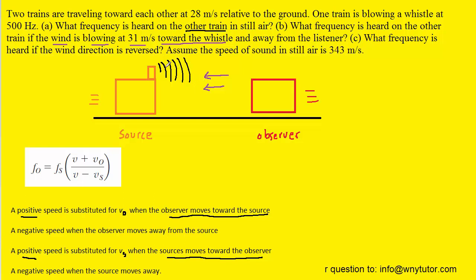And basically what that's going to do is it's going to essentially slow down the speed of the sound that's coming off the source train. Remember the speed of sound is 343 meters per second.